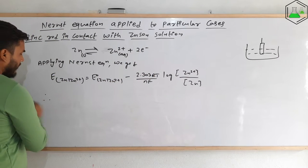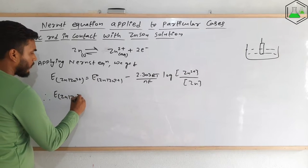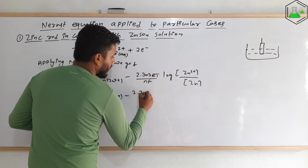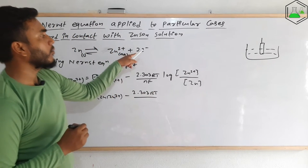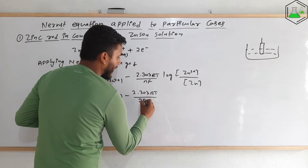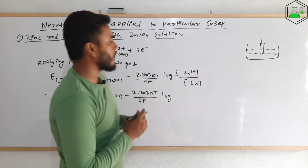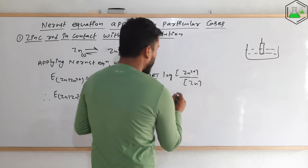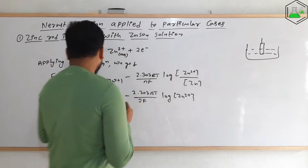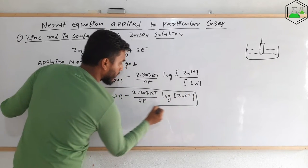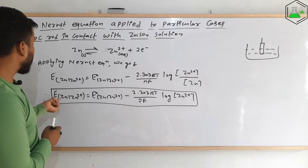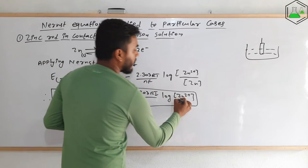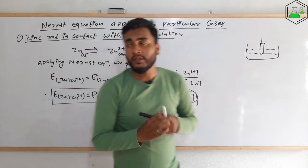Since zinc is solid, its concentration equals 1 and can be removed from the denominator. The equation simplifies to: E(Zn/Zn²⁺) = E°(Zn/Zn²⁺) − (2.303RT/2F) log[Zn²⁺]. This is the formula by which we can find the electrode potential of the zinc electrode when it is kept in zinc sulfate solution. It depends on the temperature and the concentration of zinc ions.